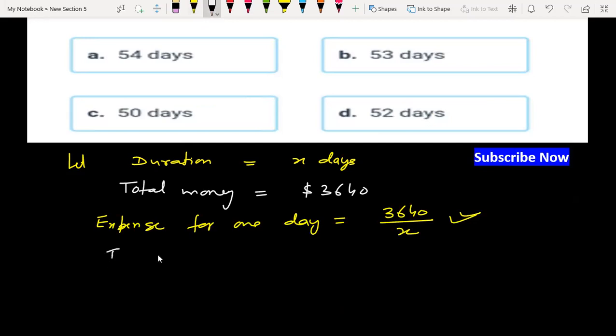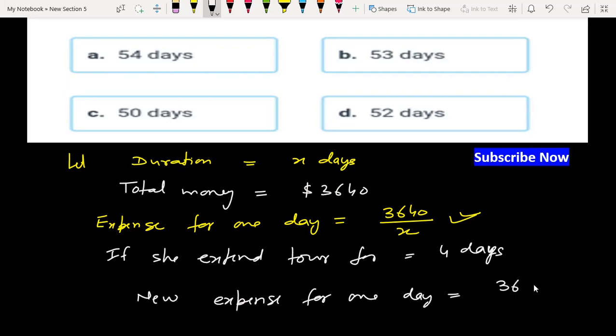If she extends for 4 days, new expense for one day per day is 3640 divided by x plus 4.